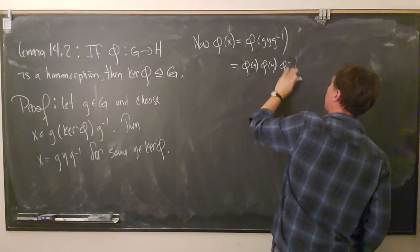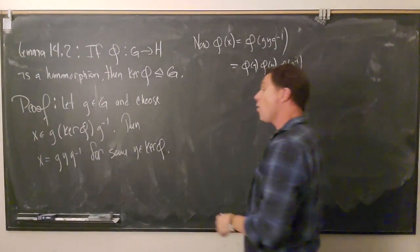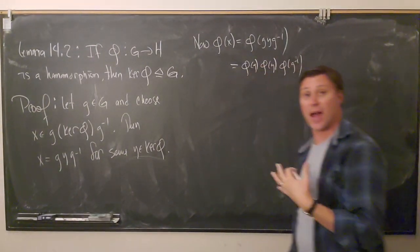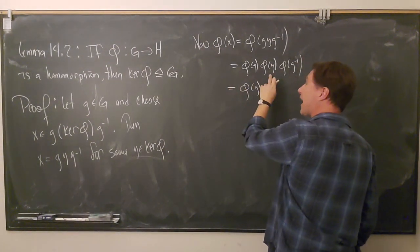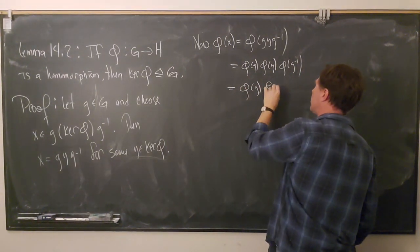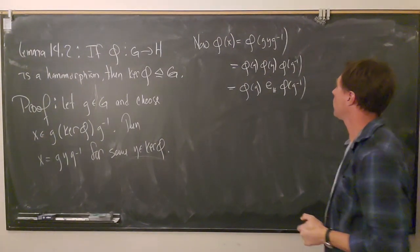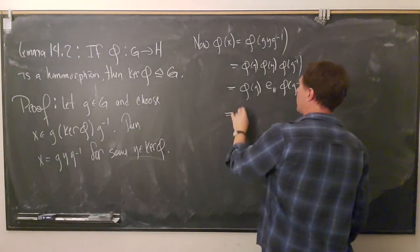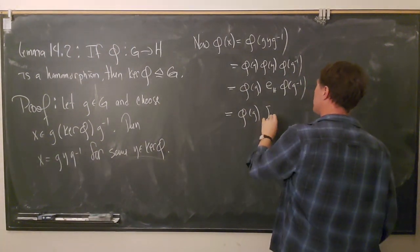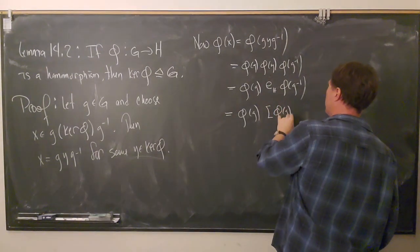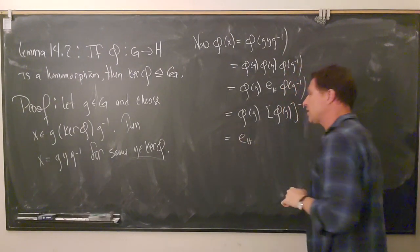My goal is to show that x is in the kernel of phi, which means I need to compute phi(x). Now phi(x) equals phi(g·y·g⁻¹). Since we've got a homomorphism, I can split this up as phi(g)·phi(y)·phi(g⁻¹). But y lives in the kernel, which means phi(y) equals the identity e_H. So this becomes phi(g)·e_H·phi(g⁻¹). Using another property of homomorphisms, phi(g⁻¹) is the inverse of phi(g), so these cancel out and give us e_H.